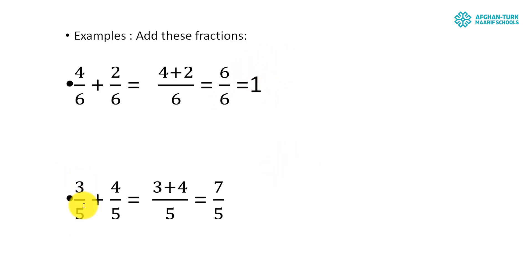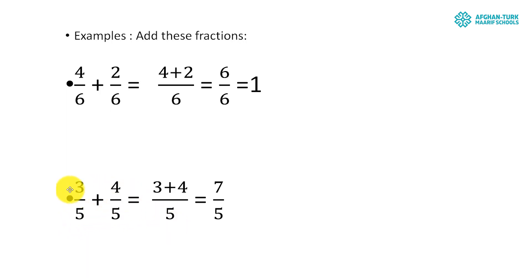Another example: 3 upon 5 plus 4 upon 5. As you can see, the denominators are the same, so we just keep the denominator. 3 plus 4 is equal to 7, giving us 7 over 5 — or seven upon five — easily.